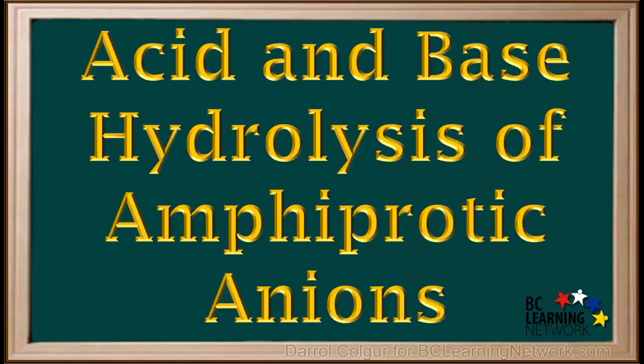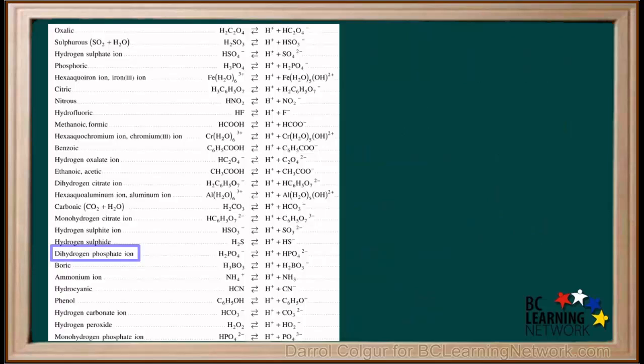Now that we know how to identify ions as amphiprotic, let's take a closer look at how these can undergo both acid and base hydrolysis. We'll use the dihydrogen phosphate ion, H2PO4-, as an example.